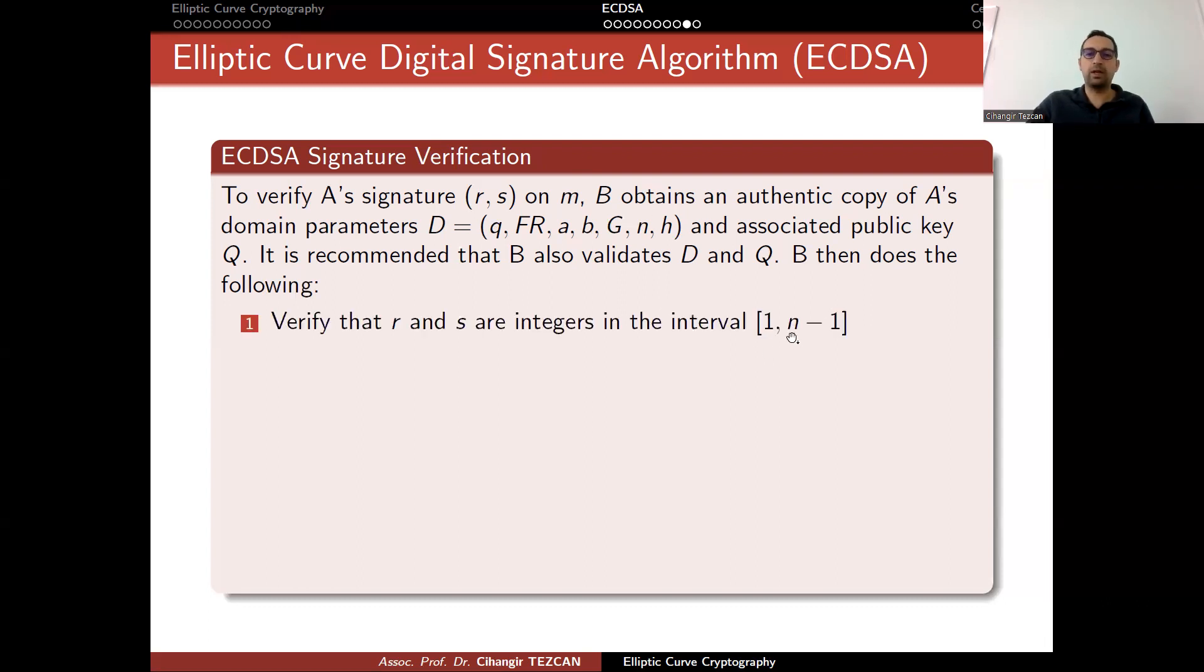They verify that r and s are integers in this interval. You might think that this is obvious, but sometimes people don't check it and there are many buggy implementations. Please do not skip trivial steps. This is important.